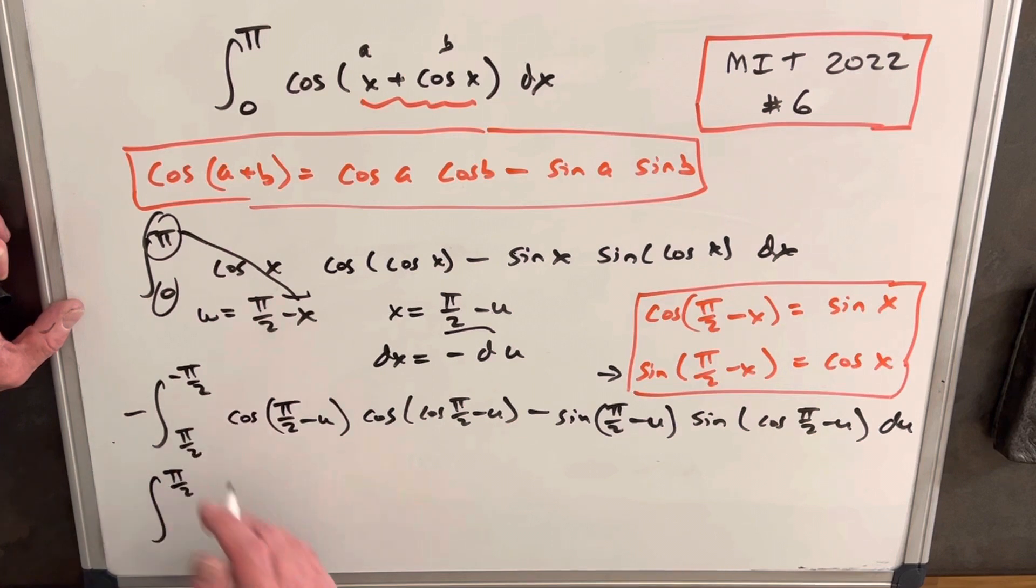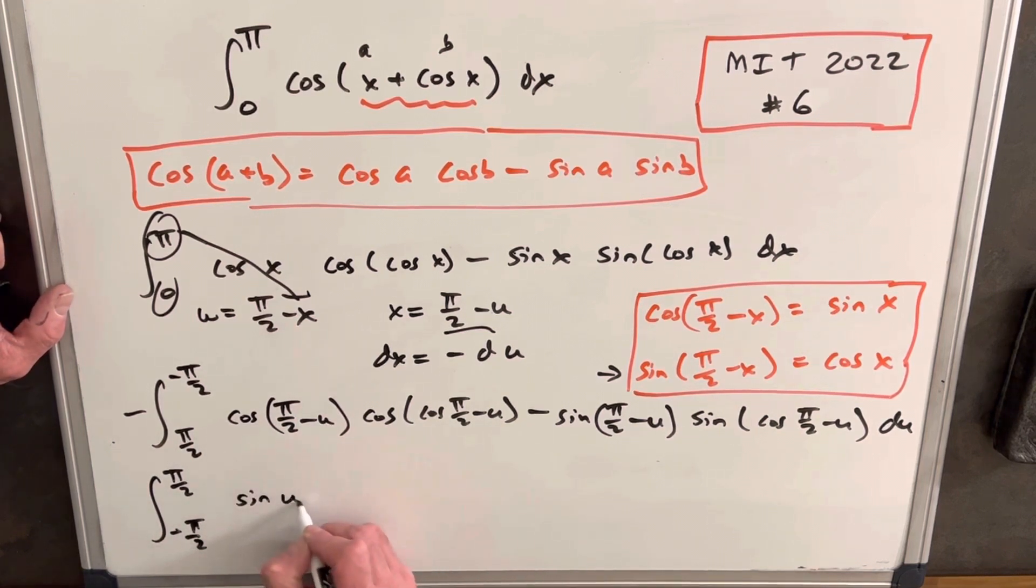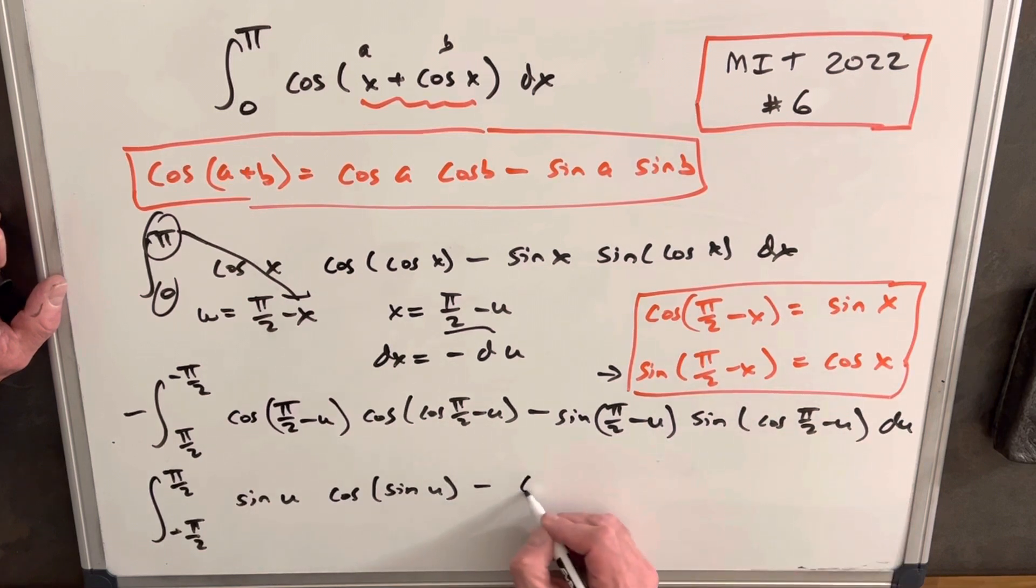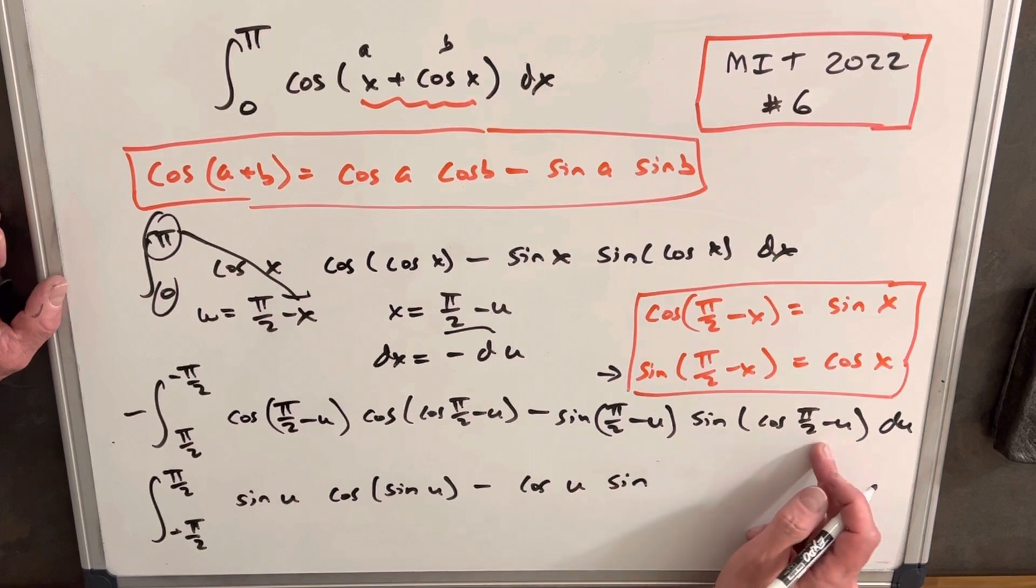This integral becomes from pi over 2 to minus pi over 2. Cosine pi over 2 minus u is going to be sine of u. This is going to be cosine, but again, this is sine of u in here. And so this one's going to be cosine of x, or cosine of u. And then we're going to have sine, this here is going to be sine of u du.